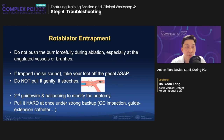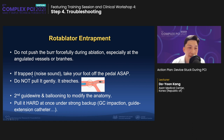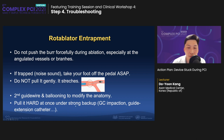Regarding rotablation entrapment: it usually happens when pushing the burr forcefully during ablation, especially at angulated vessels or branches. If trapped, you can hear a noisy sound — take your foot off the pedal as soon as possible, and do not pull gently or slowly because it stretches. One option is to bring a second guidewire and balloon to modify the anatomy. My tip is to push hard at once using strong backup with the guiding catheter, or using a guide extension catheter to maximize force without stretching the weak portion.